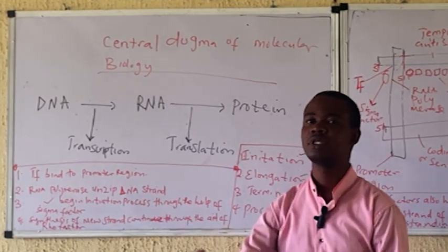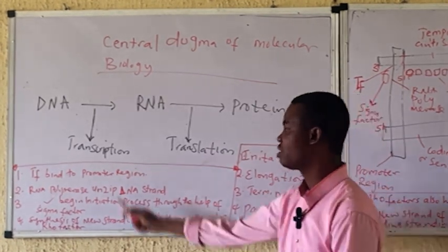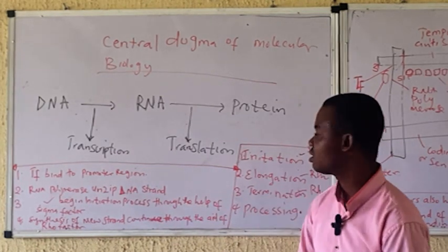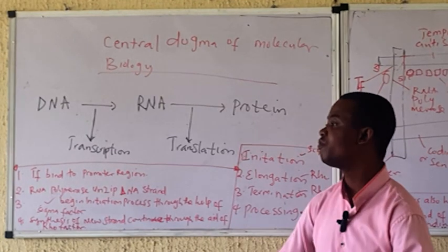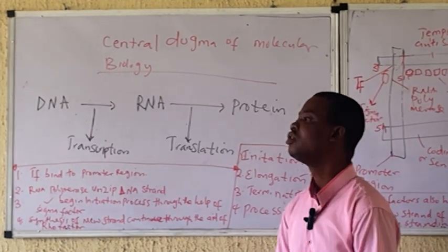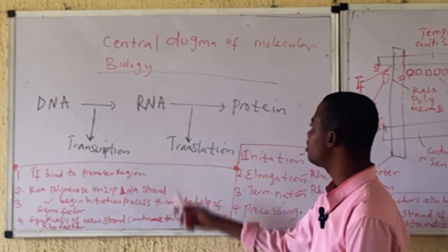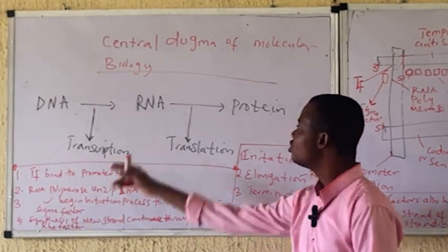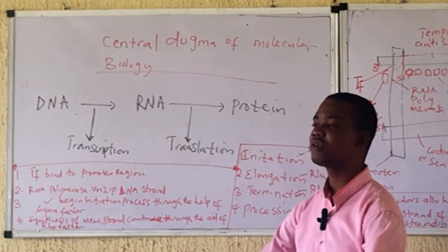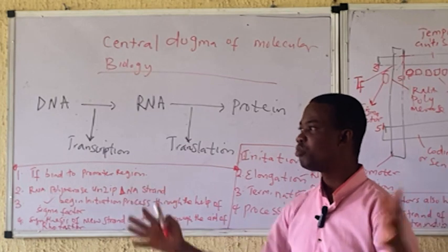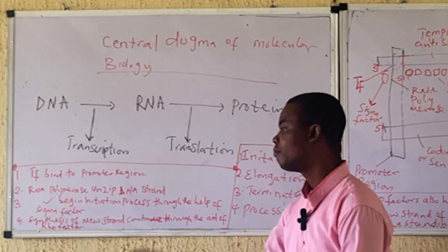The Central Dogma of Molecular Biology involves two processes. The first process is transcription and the second process is translation. Transcription involves the synthesis of RNA using DNA as template, and translation involves the synthesis of protein using RNA as the template. These two processes combined make up the Central Dogma of Molecular Biology.